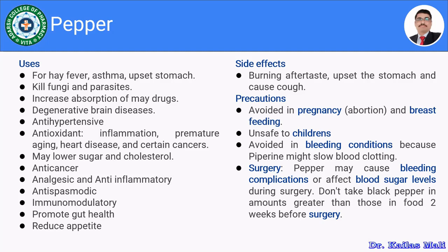It boosts immunity and is used as an immunomodulator in various diseases. Furthermore, it promotes gut health and reduces appetite, which helps with weight reduction. These are the various uses and health benefits of pepper. Moving towards the side effects — it shows certain side effects like burning aftertaste, upset stomach, and causes coughs. These are the three major side effects of pepper.